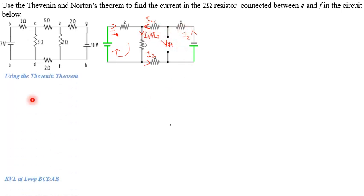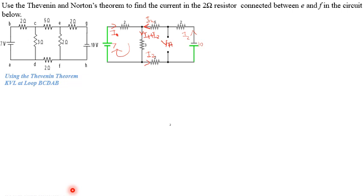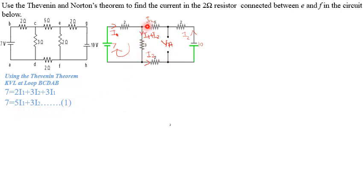Using Thevenin's theorem, for the loop at B-C-D-A-B, we apply KVL. We are moving from a lower potential to a higher potential, and the voltage there was 7 volts, with a 10 volt source also present. Writing the equation: 7 + 3·I2 + 3·I1 — combining and simplifying gives our first equation: 7 + 5·I1 + 3·I1.